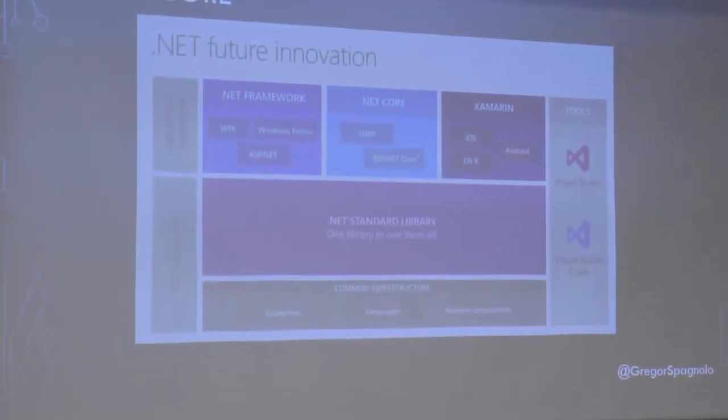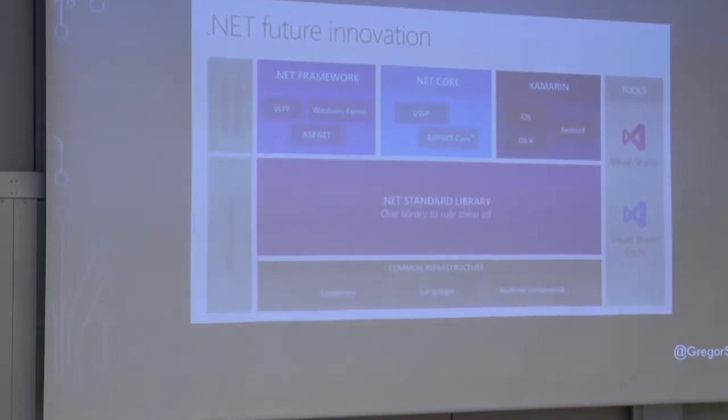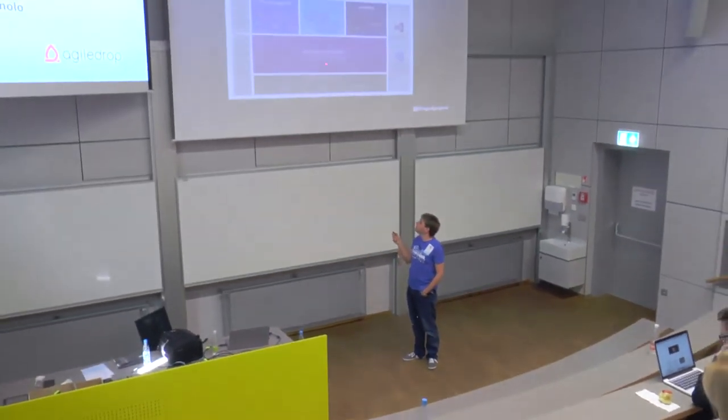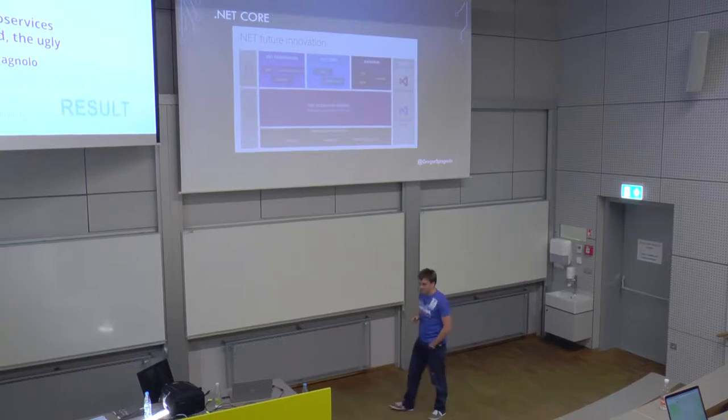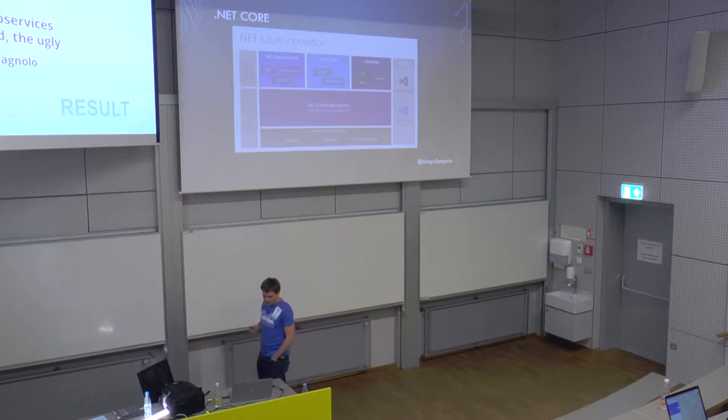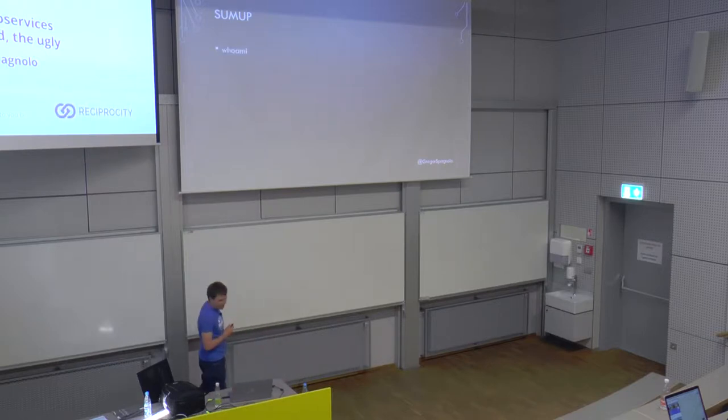Then we have Xamarin. Who knows what is Xamarin? So Xamarin is iOS, OS X, and Android development in .NET. And we have also .NET Standard Library. .NET Standard Library is the library to rule all the libraries. Why? Because you can build a .NET Standard Library, and you can include this library inside .NET Framework, inside .NET Core, and inside Xamarin applications. And let's sum up what we talked so far. I talked about who I am and .NET Core.